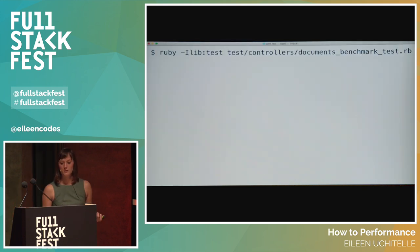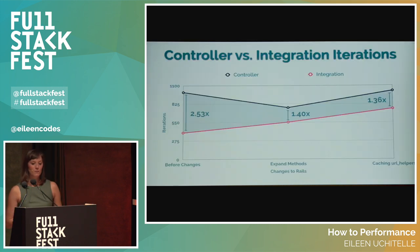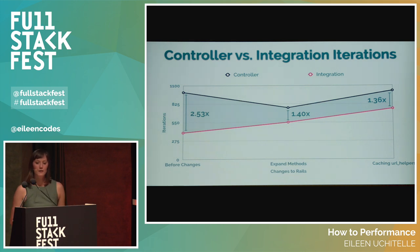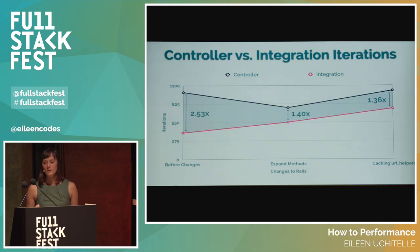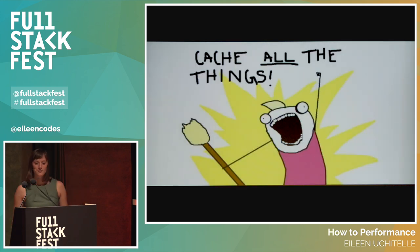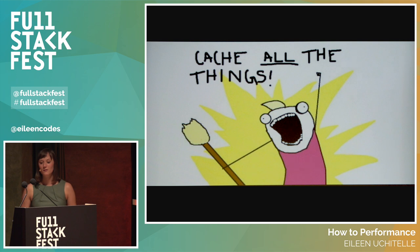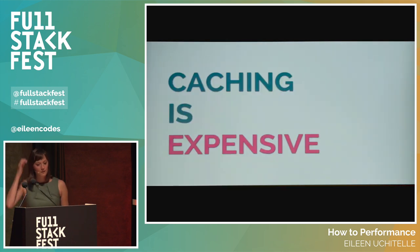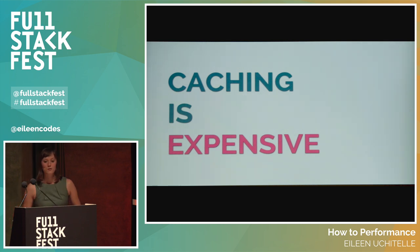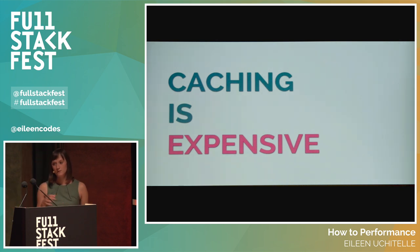After caching the URL helpers, we ran the benchmark script again and saw a minor improvement. Integration tests went from being 1.4 times slower to 1.36 times slower, and we saw an improvement in the controller test as well. But Aaron pointed out there's a better way to fix this besides just caching URL helpers. When working with performance, it's really easy to think you should just cache all the things — but caching isn't a free solution to all your performance problems. It comes with a cost, and if you're able to speed up your code without caching, you should do that first and then cache later. You don't want to be putting a Band-Aid on problems that you can fix easily. Optimize first, cache second.